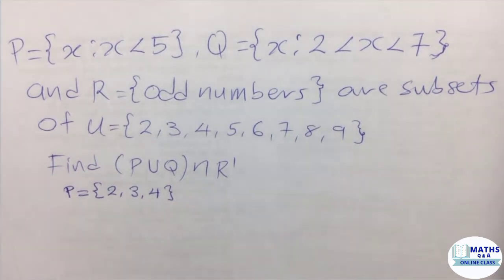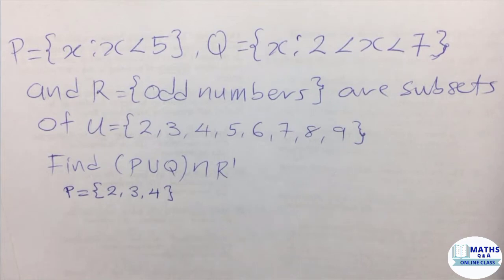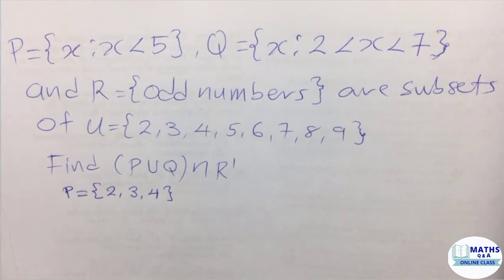They are all less than 5. We're not adding 5 to it because it doesn't say that it is less than or equal to. It says that it is less than 5.